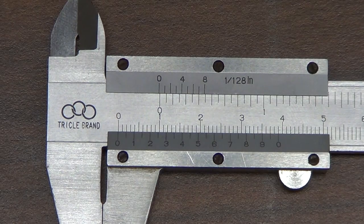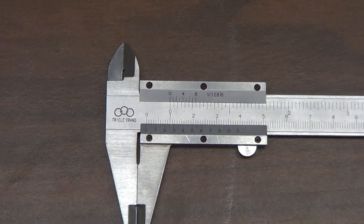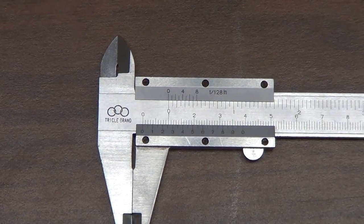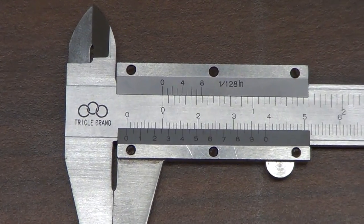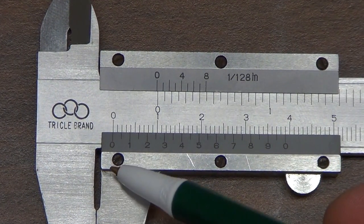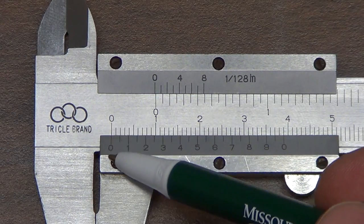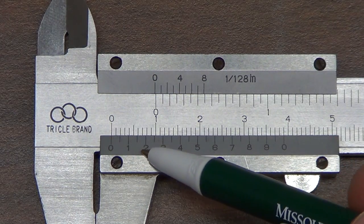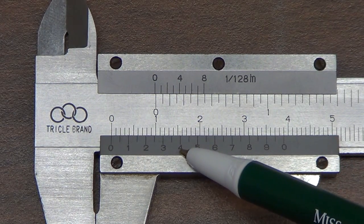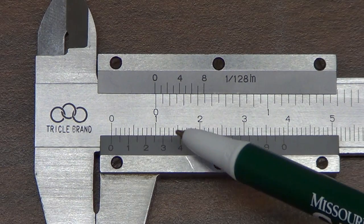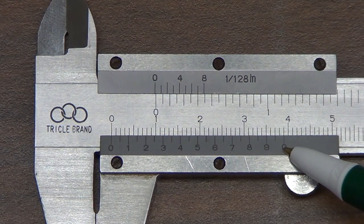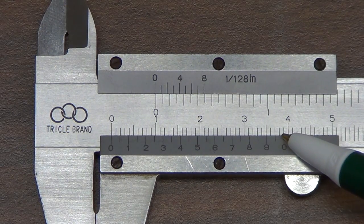When it's shut, the vernier caliper isn't measuring anything. That is, then the zeros on the major and minor axes line up. So we can see that this zero on the minor scale and this on the major scale, they line up quite well. And you'll notice nowhere else does that occur—that is, the markings on the minor and major scale line up, except again at zero here and there.